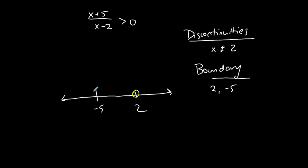Anything that makes the denominator zero always gets an open circle. The way I determine whether negative five is open or closed is to look at the inequality symbol, which says greater than — not greater than or equal to. If it said greater than or equal to, I would shade it in. But since it is just greater than, this is open as well. Always open at discontinuities, and open at the numerator zero if there is no 'equal to' in the symbol.